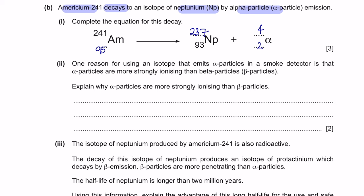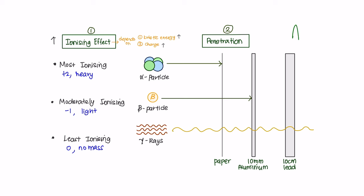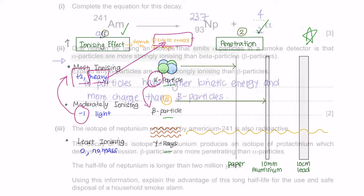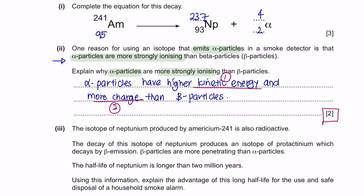Part 2: Explain why alpha particles are more strongly ionizing than beta particles. Alpha particles are heavier, therefore they have a higher kinetic energy. Additionally, alpha particles carry more charge compared to beta particles. Since you are given two marks, make sure you state both reasons.